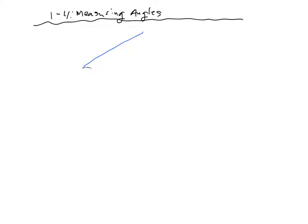I want you to draw that angle right there. I'm going to put arrows on the end. I put a point here, a point here, and a point here. I'm going to name this A, this B, and this C, and on top of that we're going to put a 1 in here.